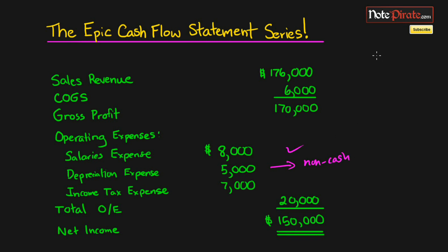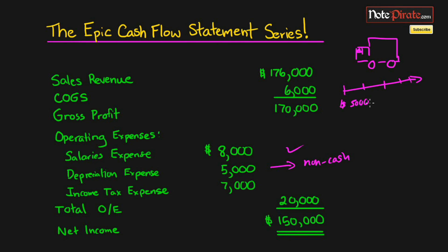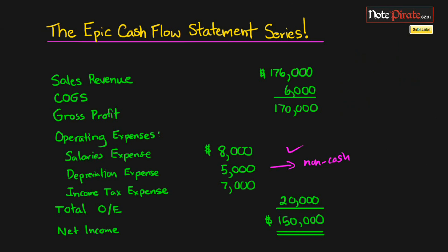Depreciation is different because this is definitely a non-cash expense. If we have a long-term asset like a truck, it's going to be systematically depreciated across its useful life. Let's say we have five thousand dollars of depreciation a year. This amount is allocated in each period and is not money or cash being lost or used in your company, so we're going to have to add that back in.